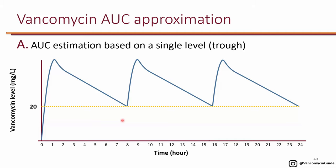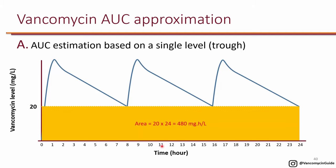If you have a trough of 20, then 20 times 24 is at least 480, so you've definitely achieved an AUC of at least 400 — and you still have all those areas on top. At the very minimum you have 480 plus all of those, so a trough of 20 is an overkill. For serious infections, targeting a trough of 15 to 20 basically guarantees an AUC of 400, since 15 gives 360 and 20 gives 480. That's where those recommendations come from, though a trough of 15 to 20 could actually be overdosing.